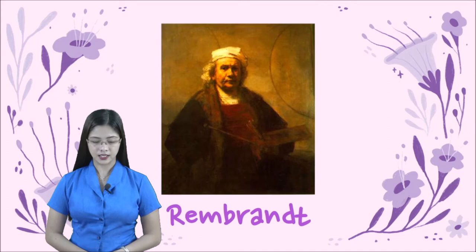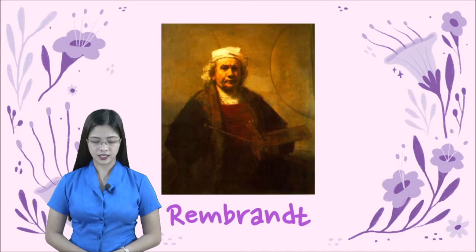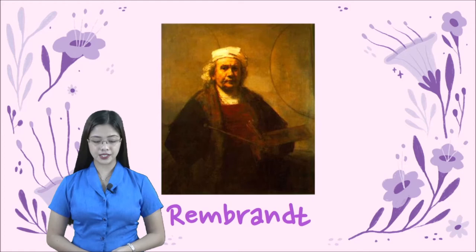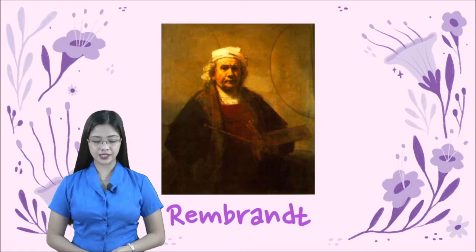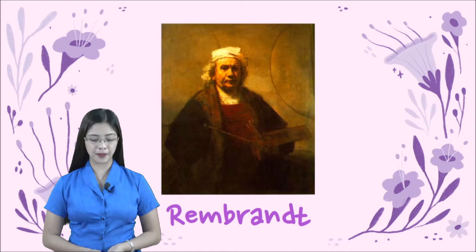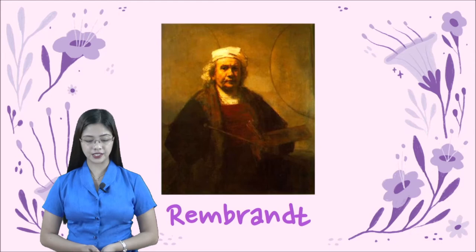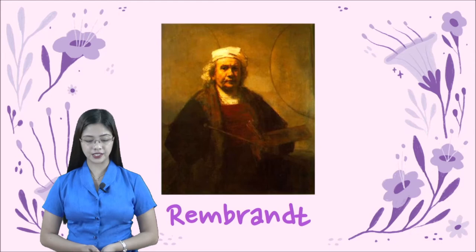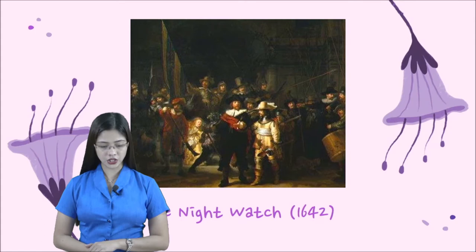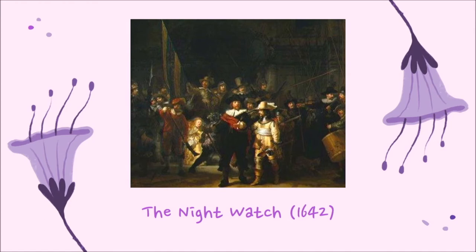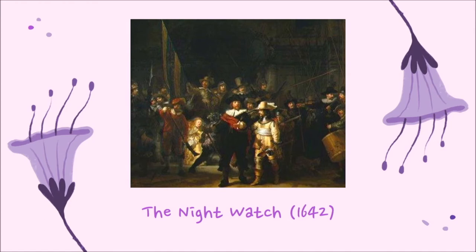Let's discuss about Rembrandt. Rembrandt van Rijn is a famous Dutch artist and he is a realistic artist. Most of his work belongs to the realistic art category. Some of his famous works include The Night Watch, made in 1642, and Man in the Oriental Costume, made in 1632.